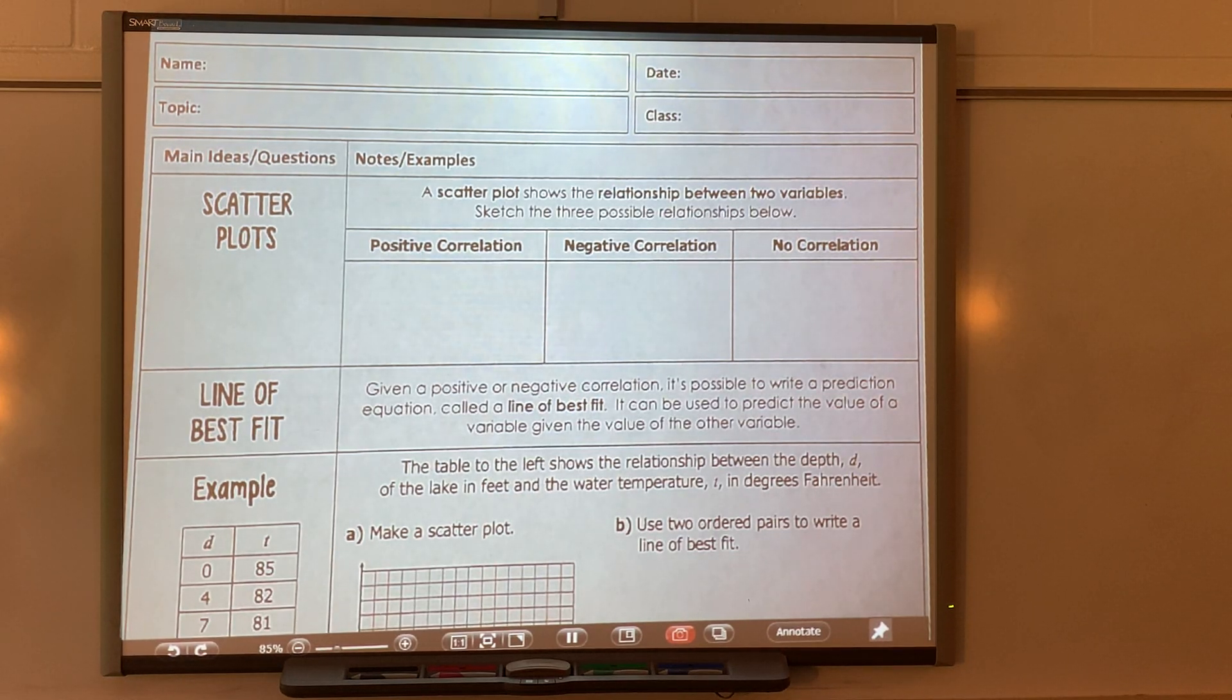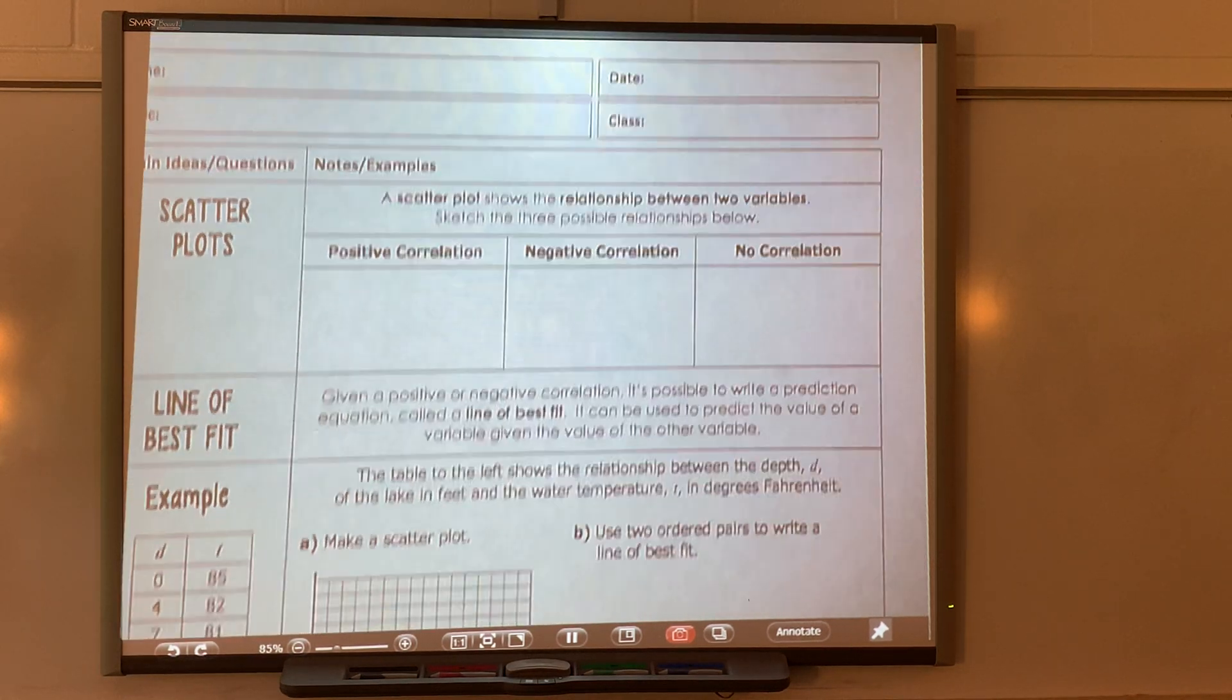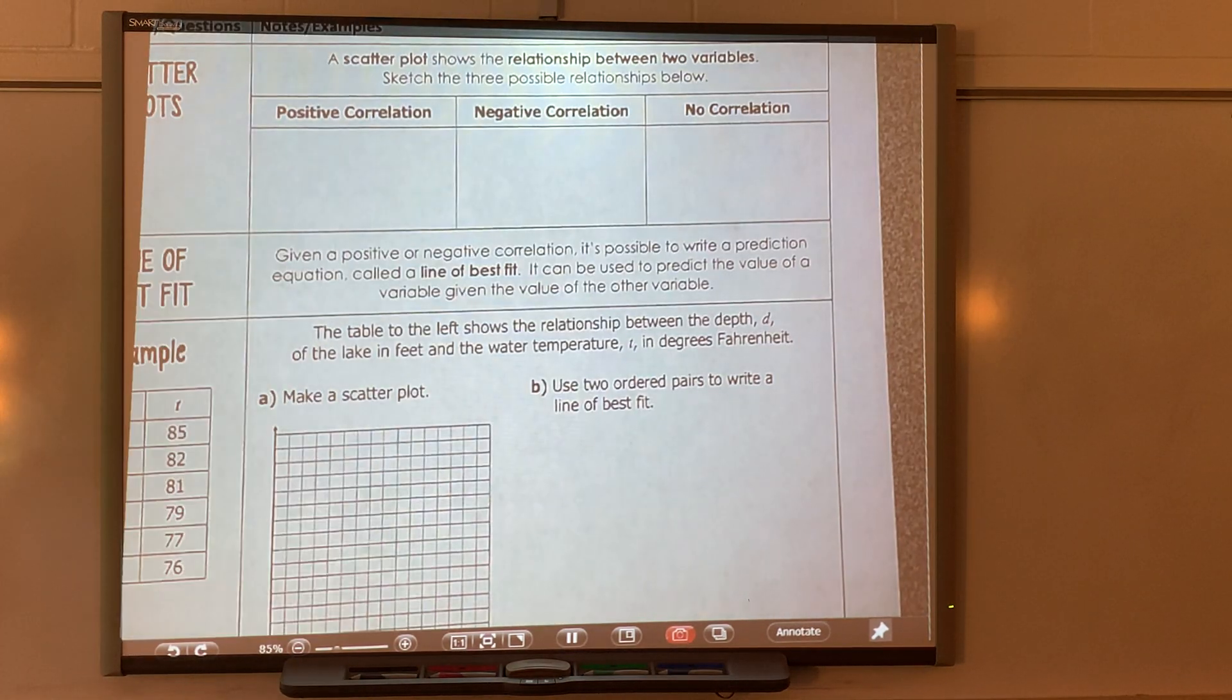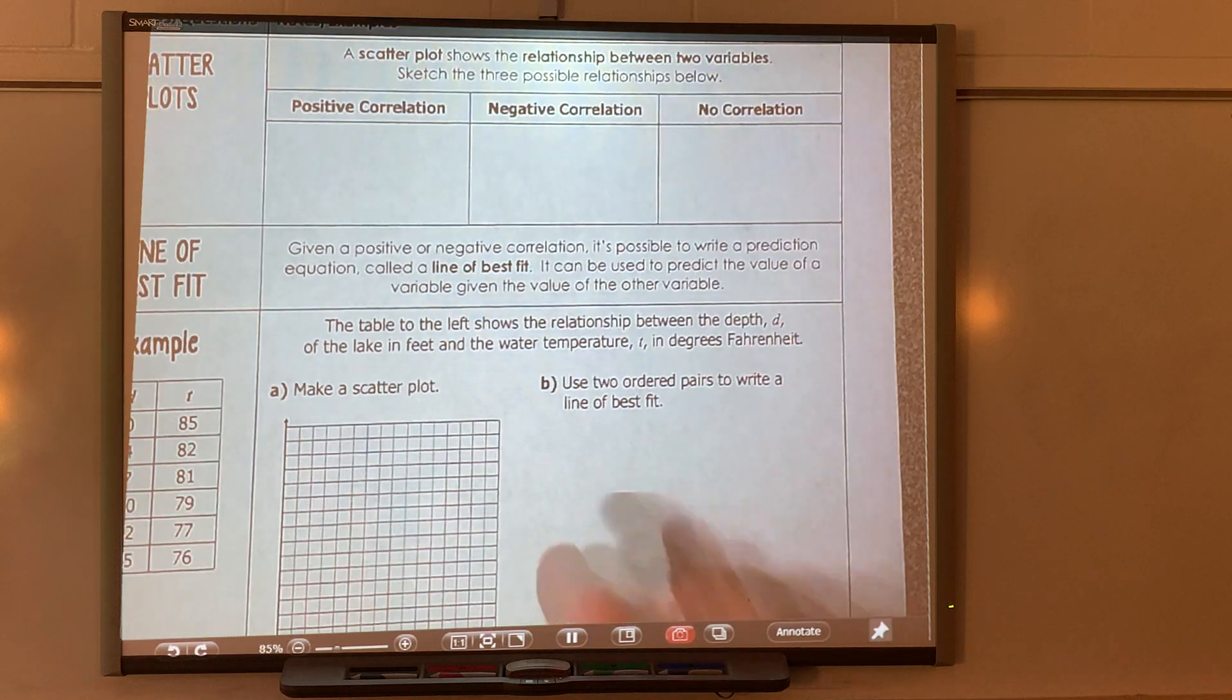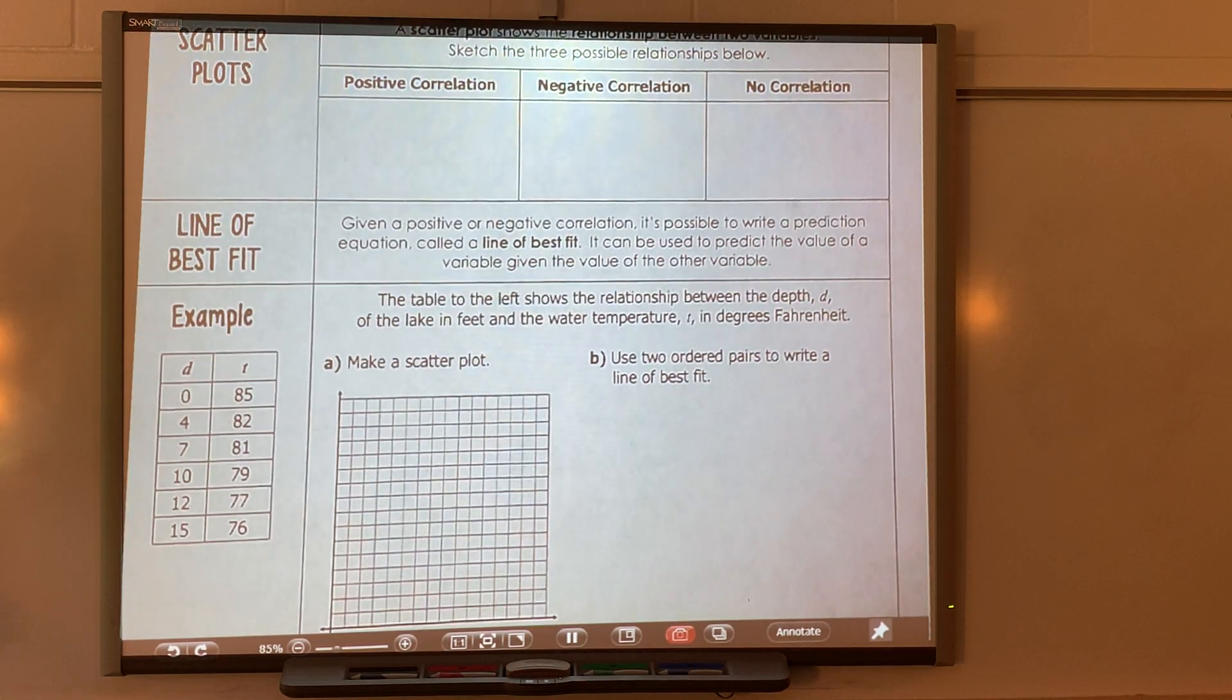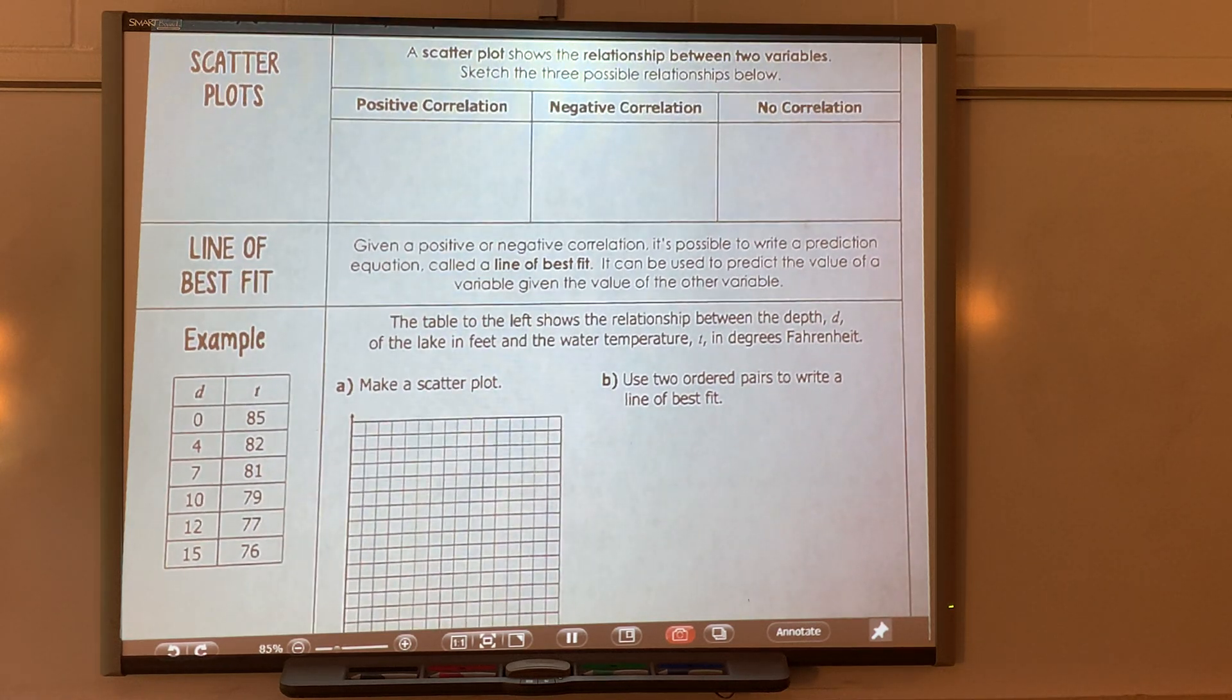Yesterday we were looking at finding the slope of a line and writing the equation in point-slope form. We're going to continue with that today for the first problem, then we're going to look at finding the regression line with the calculator. I taught you all how to do this in algebra one, so it should be pretty easy. Then I'm going to let you finish your assignment from yesterday.